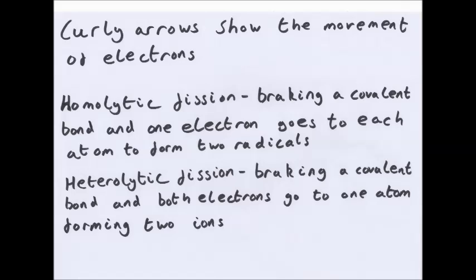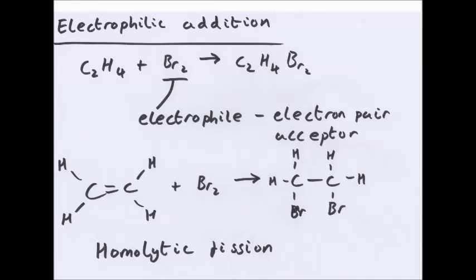The first of the three you need to know is electrophilic addition. This is when you have an electrophile — an electron pair acceptor — and you have an alkene as a reactant. You add the electrophile and it becomes one product; two reactants, one product. A common example is bromine — it might be hydrogen bromide or just bromine. For example, ethene plus bromine becomes 1,2-dibromoethane. Heterolytic fission occurs because both electrons from the bond go to one of the two atoms.